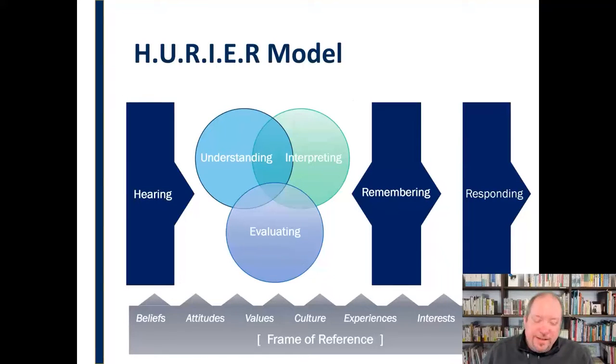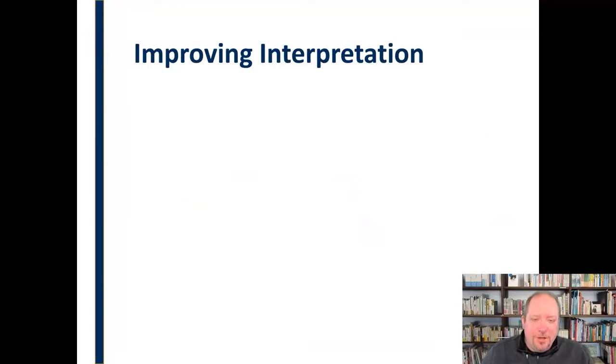Where it fits into that model is that as we process things and make sense of things, we work to understand, interpret, and evaluate. So that's where we're at within the Hurrier model. Now, having talked about some of the different elements, let's talk about what we can do to improve our interpretation as listeners.